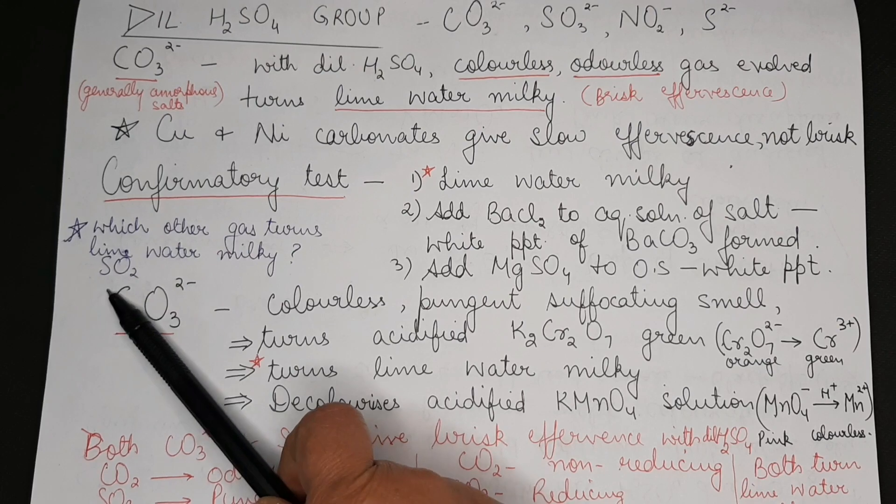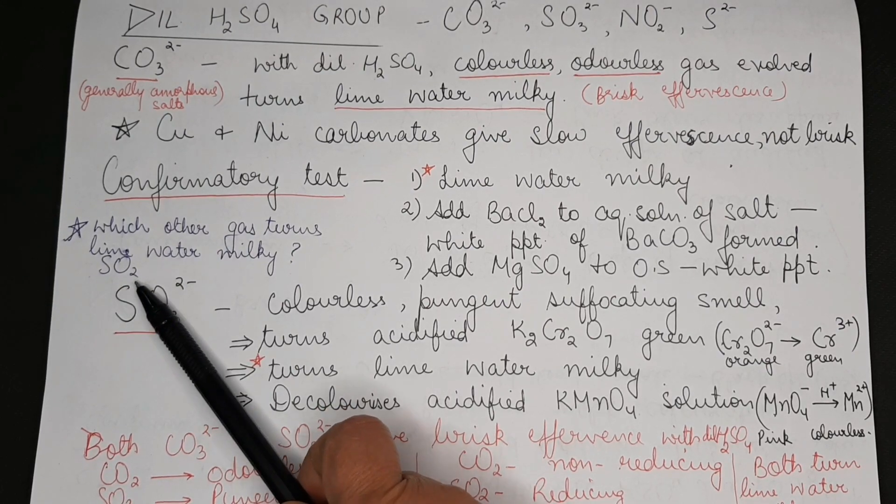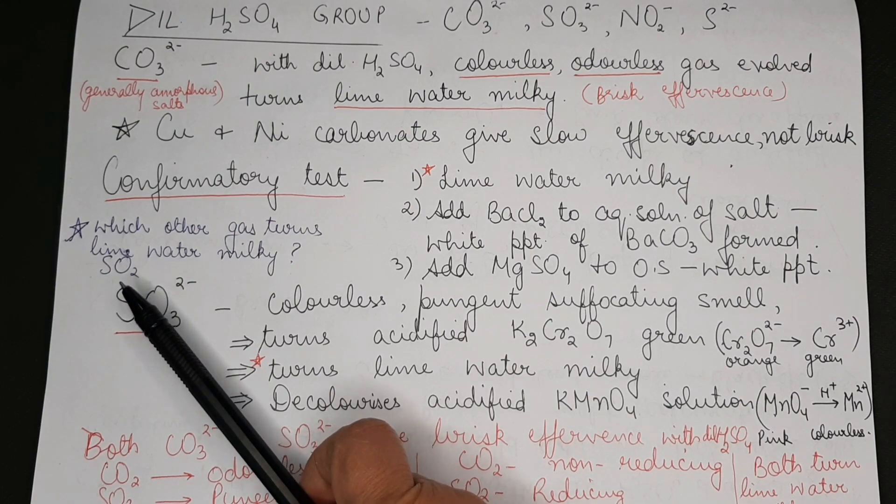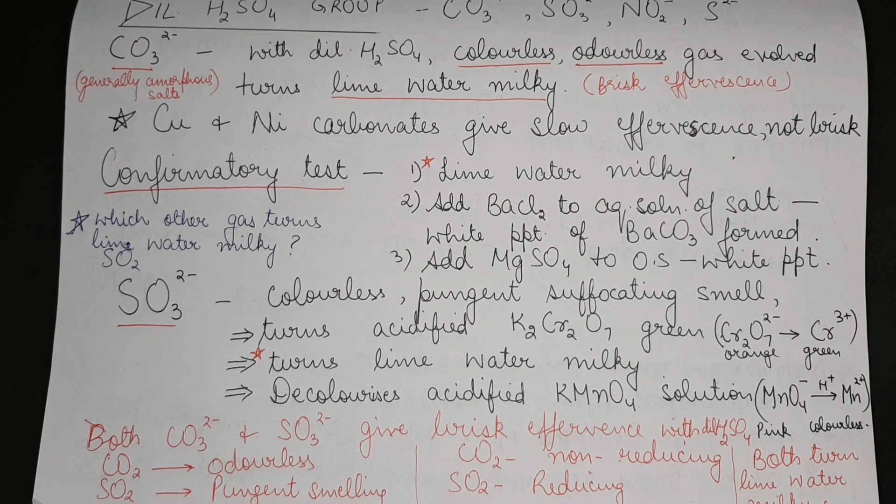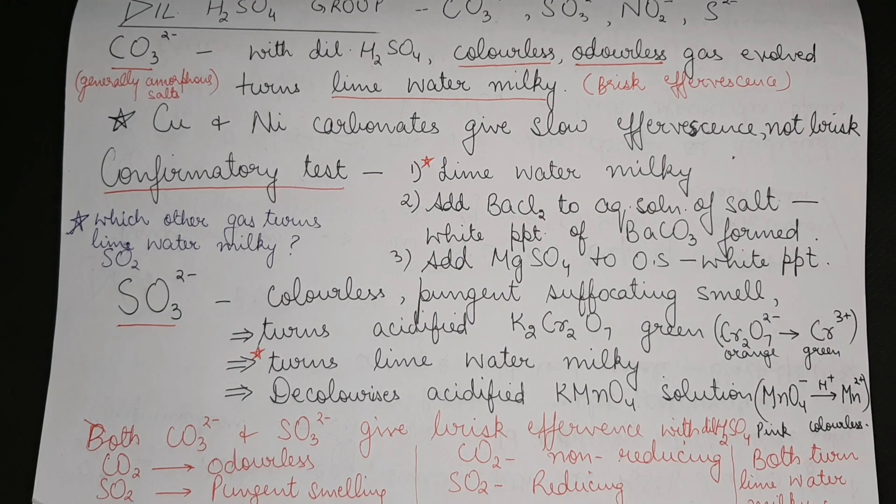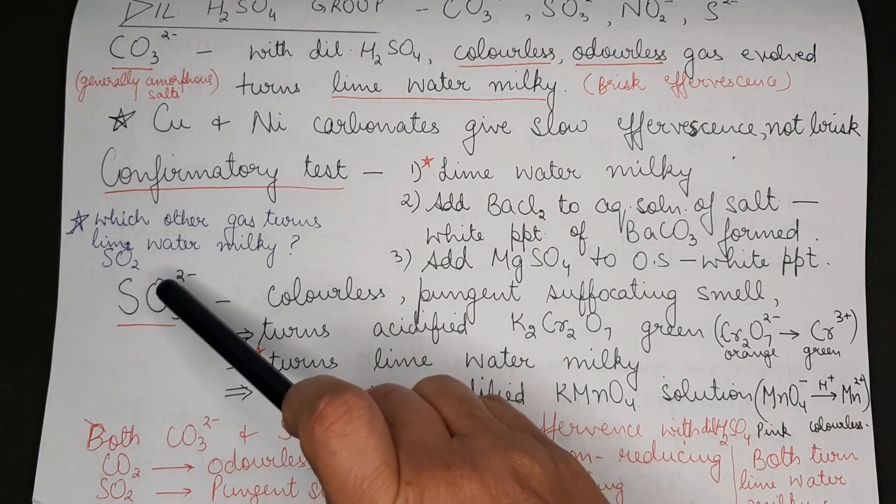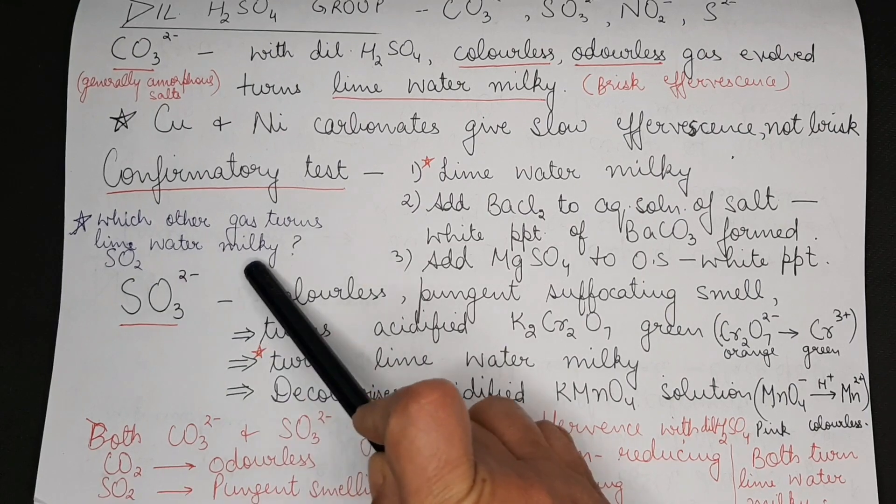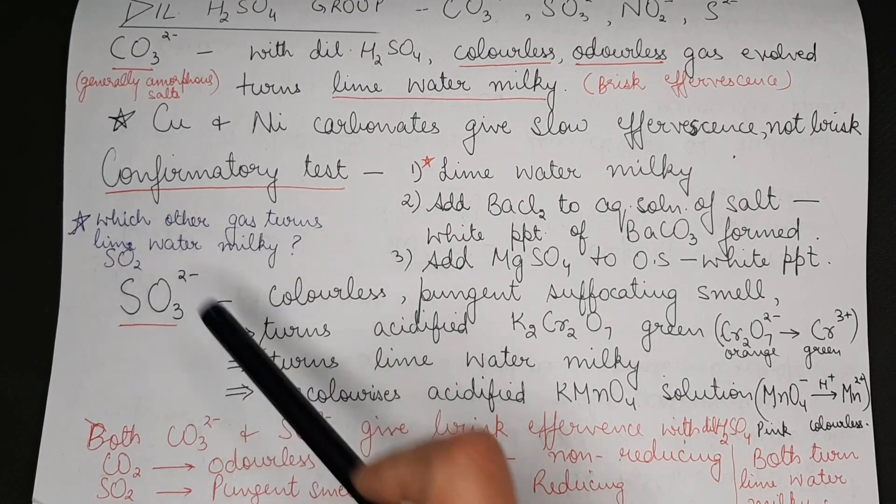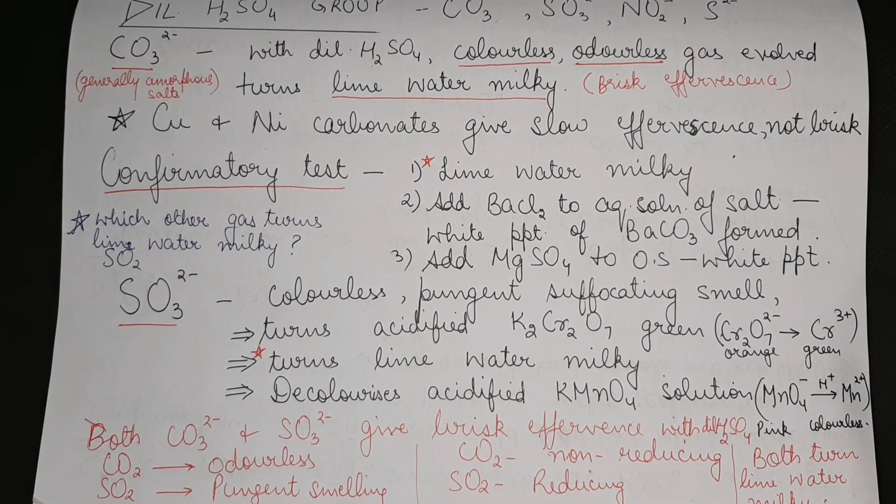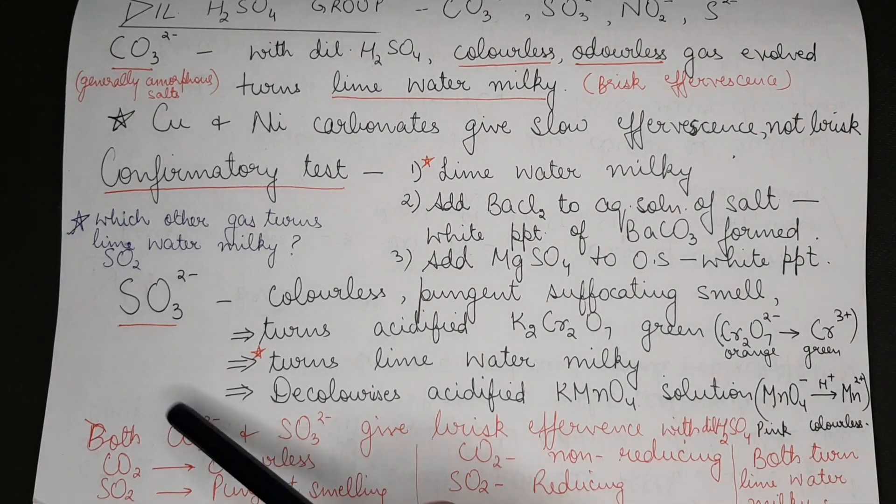Which other gas turns lime water milky? This is an important question for your viva. It's sulfur dioxide which also turns lime water milky like carbon dioxide. Remember, sulfur dioxide behaves exactly like carbon dioxide with lime water. The way lime water, that is calcium hydroxide with carbon dioxide, first forms calcium carbonate leading to milkiness, and when excess is passed that milkiness disappears due to formation of calcium bicarbonate. In the same manner, sulfur dioxide also turns lime water milky due to formation of calcium sulfite, and with excess it gives calcium bisulfite.